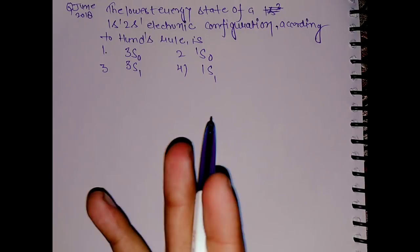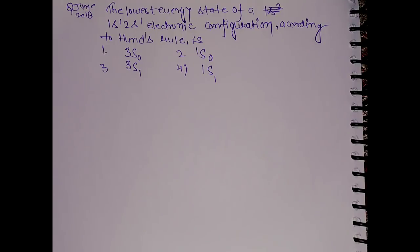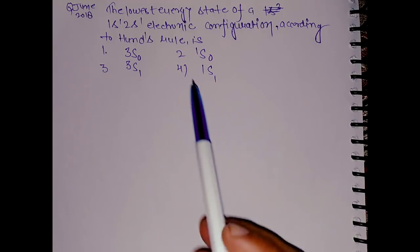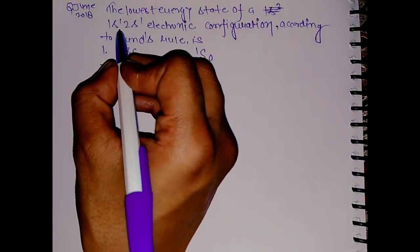Hello everyone, this question came in June 2018 CSIR-NET Chemical Science Examination. The question asks about the lowest energy state of a 1s¹ 2s¹ electronic configuration.